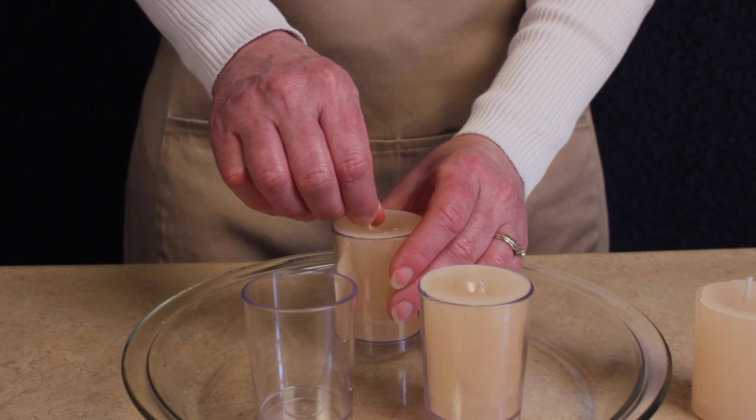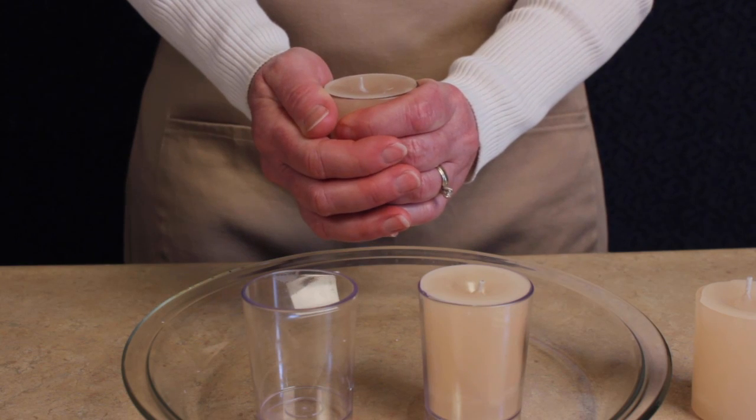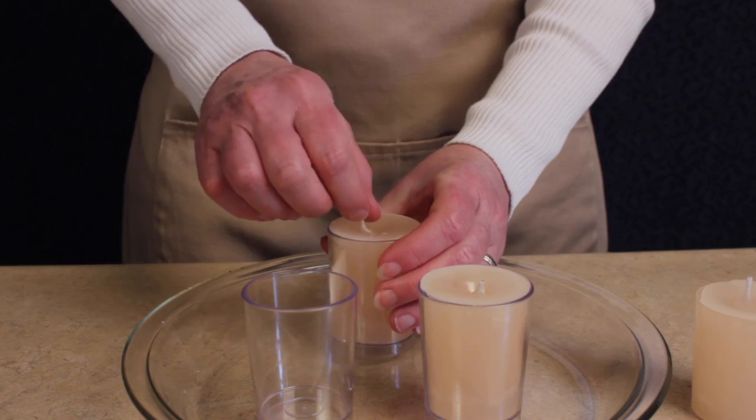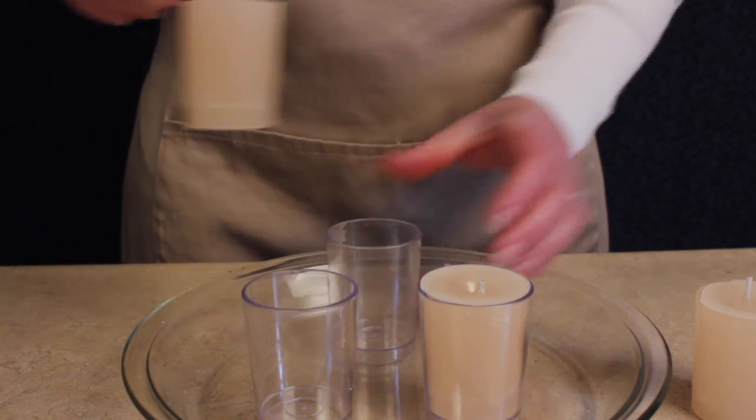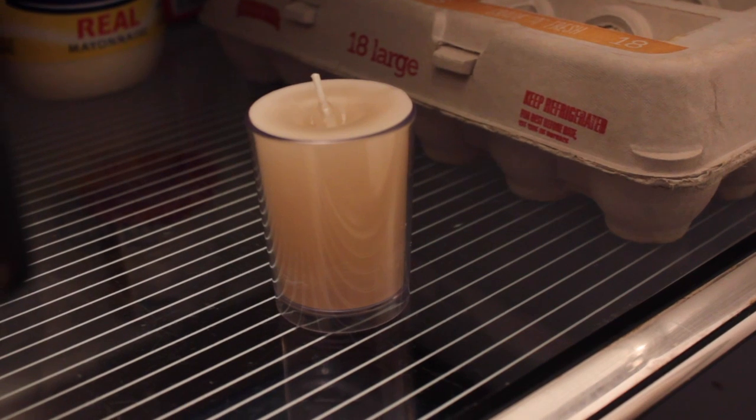Gently pull up on the wick. If the candle doesn't come out, try pressing around the outside of the votive mold with your hand. If this doesn't work, place it in the refrigerator for 15 minutes and give it another try.